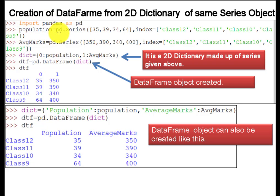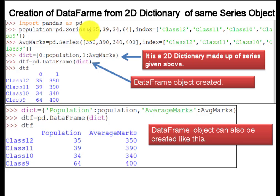How can you create the population series? First, you have to import pandas as pd. Using this pandas library, you are able to call it with the pd object. Simply you will write pd.Series. The values I want to create for population are 35, 39, 34, 64.